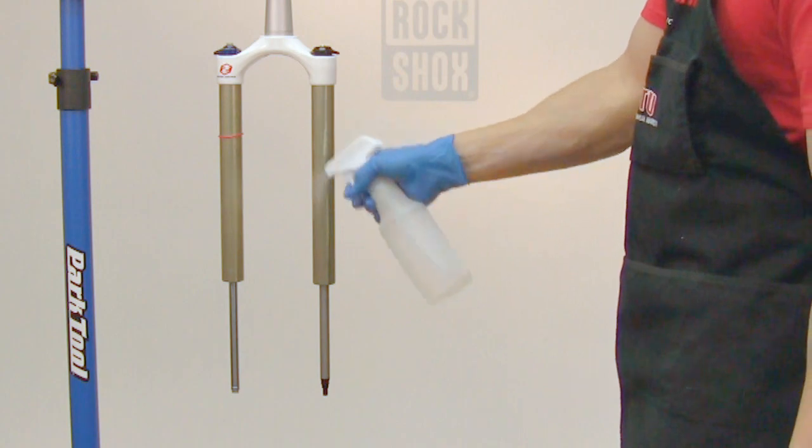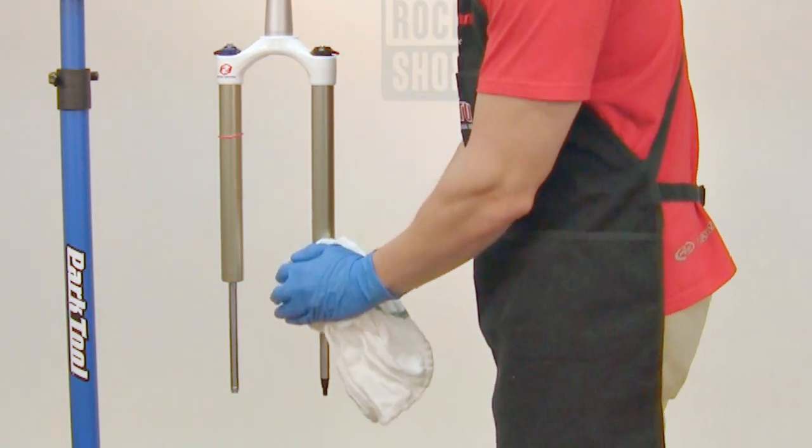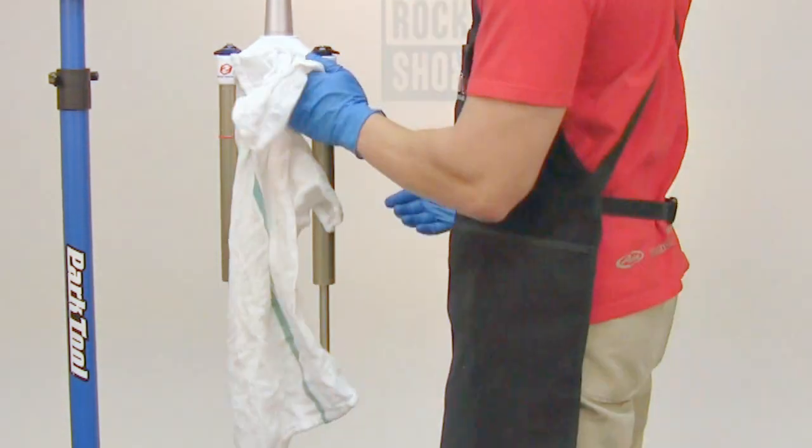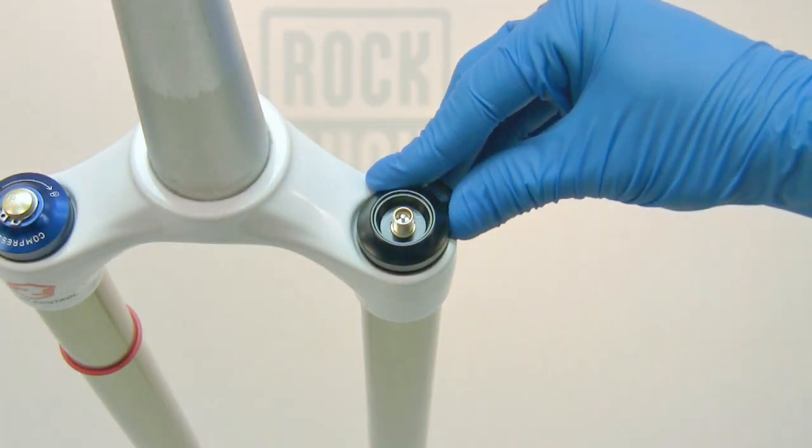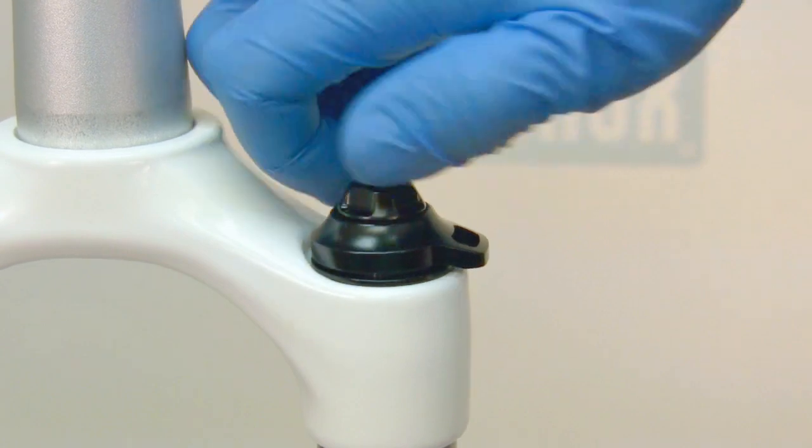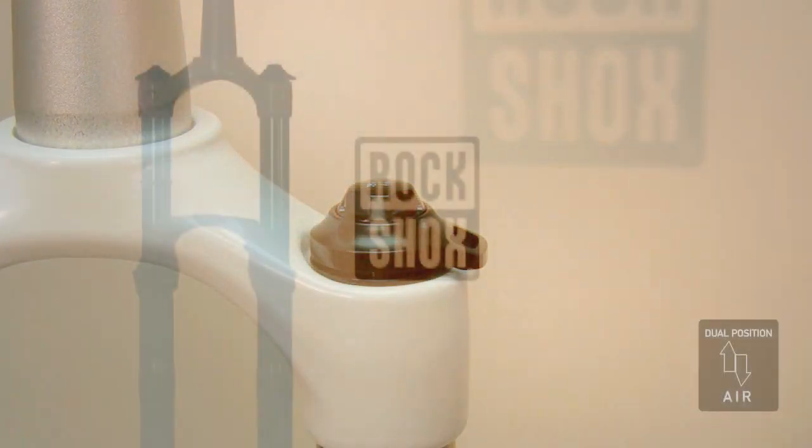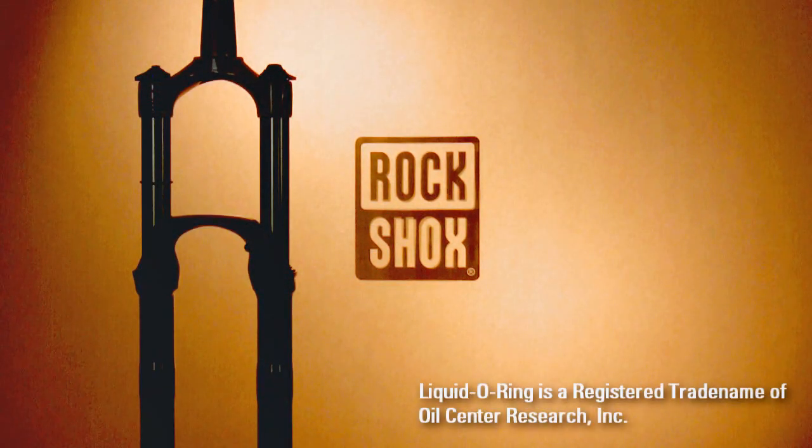The final step is to use a mild degreaser or isopropyl alcohol with a lint-free rag to clean the fork. Once you reinstall the lower legs, turn the travel adjust knob to the full travel position and pressurize the fork. Then, reinstall the air cap. This concludes the dual position air service procedure. Thank you for watching.